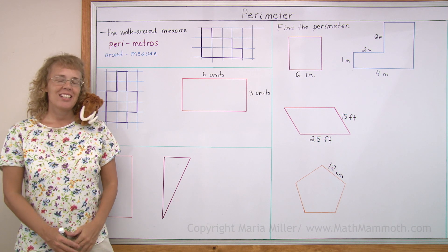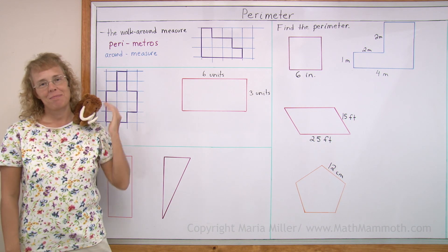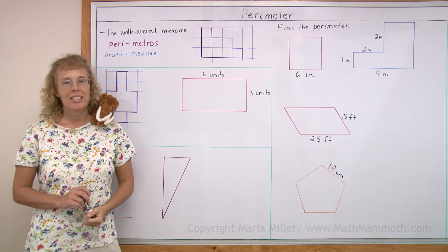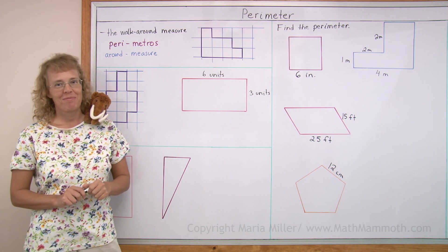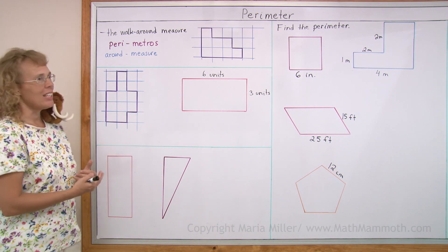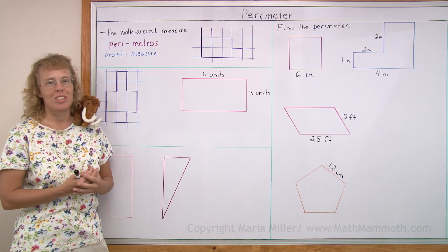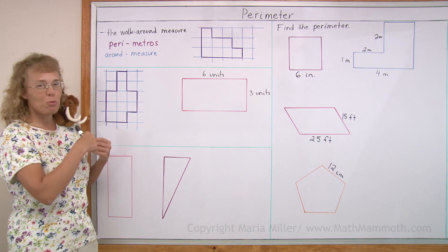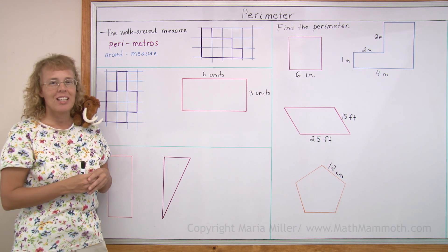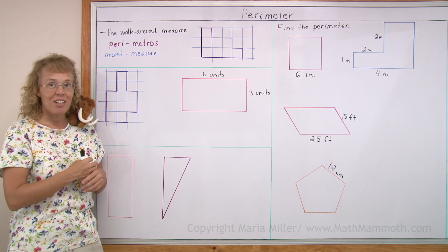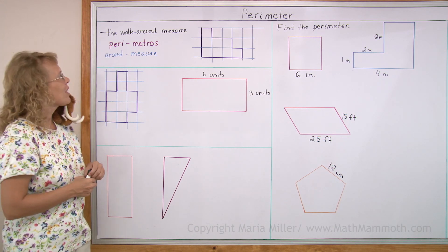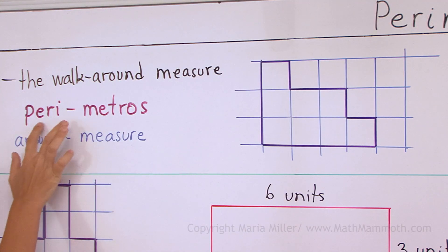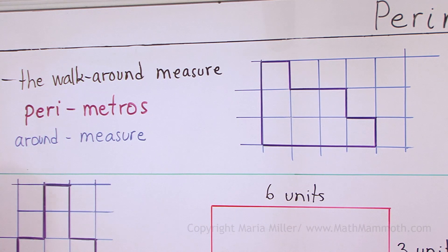Hello, my name is Maria and this is Matthew, my mascot. In this lesson we are studying perimeter. And perimeter means the walk around measure. You basically can imagine walking around a shape and then figuring out the distance that you would walk. It comes from the Greek word perimetros, meaning around, measure.